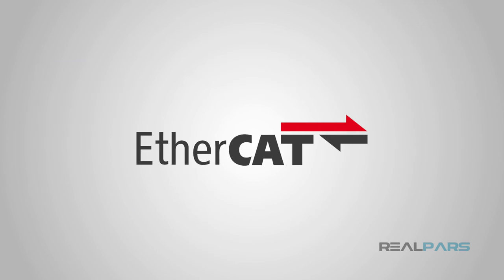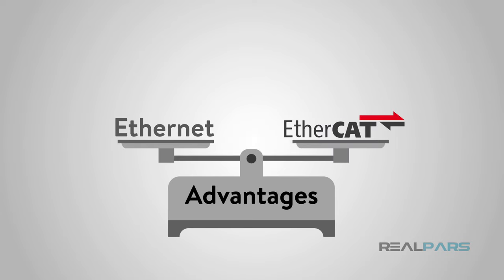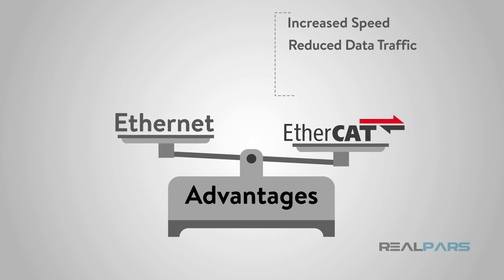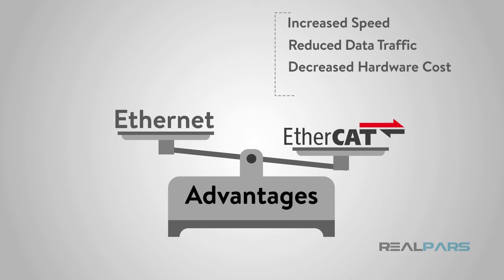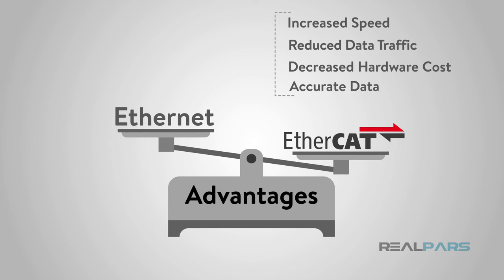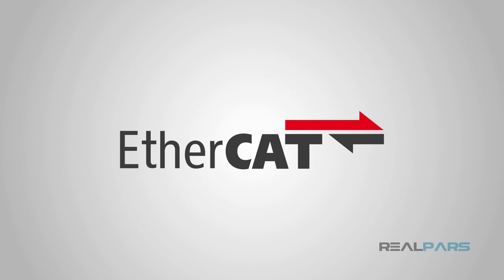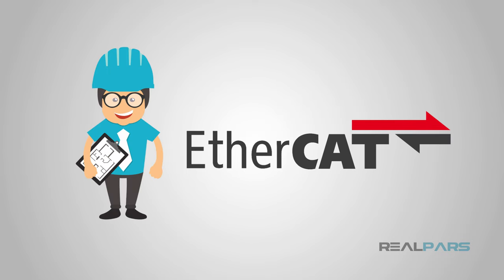In conclusion, EtherCAT is Ethernet with some really nice bells and whistles. Designed with the industrial arena in mind, EtherCAT has great advantages over the standard Ethernet network. Those include drastically increased speed, reduced data traffic, decreased hardware cost for implementation, and more accurate data due to the distributed clock mechanism. EtherCAT is increasing in popularity among controls engineers desiring a real-time and robust high-speed network for industrial controls.